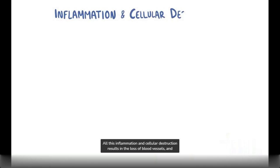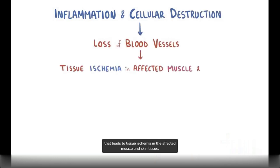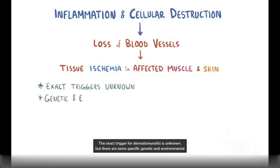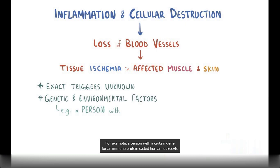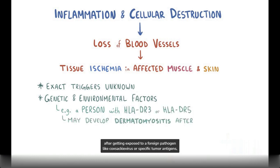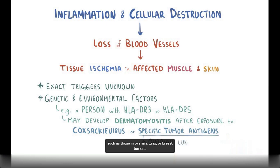All this inflammation and cellular destruction results in the loss of blood vessels, and that leads to tissue ischemia and the affected muscle and skin tissue. The exact trigger for dermatomyositis is unknown, but there are some specific genetic and environmental factors. For example, a person with a certain gene for an immune protein called human leukocyte antigen or HLA, specifically HLA-DR3 or HLA-DR5, might develop dermatomyositis after getting exposed to a foreign pathogen like Coxsackievirus or specific tumor antigens, like those in ovarian, lung and breast tumors.